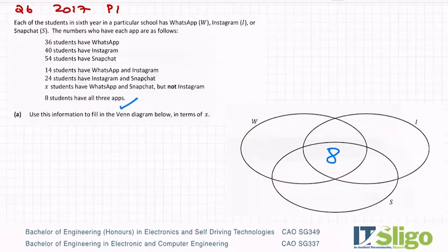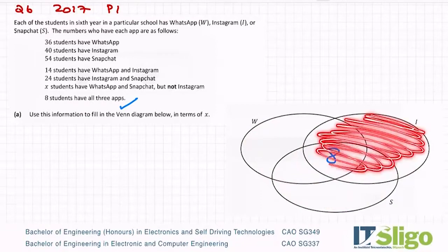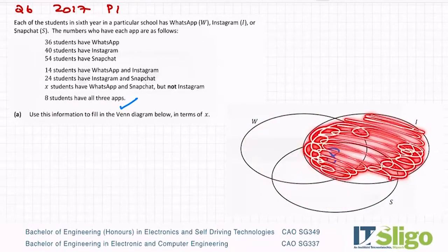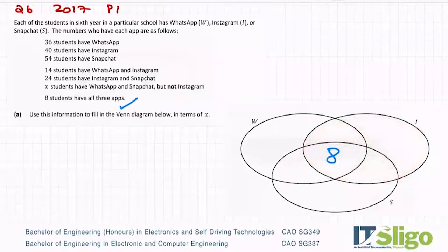Now I'm going to work from the bottom up. X students have WhatsApp and Snapchat but not Instagram. So cover Instagram with your hand — make sure you cover all of the overlap areas as well. That region is 'but not Instagram.' It says X students have WhatsApp and Snapchat, so let's put X in there. And that's that one done.